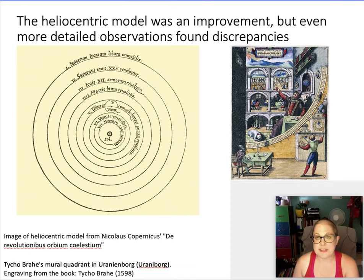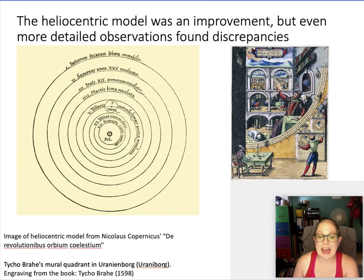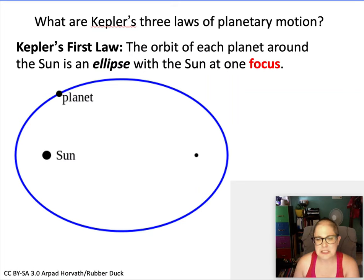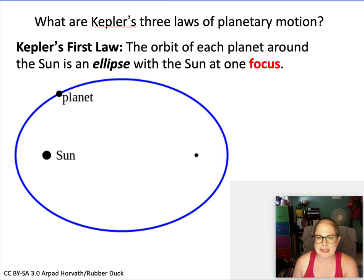These laws are models — predictions and conclusions about the natural world that in every case we've measured have turned out to be true. They don't explain why something is happening, but they explain how planets orbit the sun. Kepler's first law breaks the notion that planets orbit the sun in perfect circles — which really bothered him, as he wanted nice symmetric geometric shapes — but what he discovered is that the planets move in elliptical orbits.